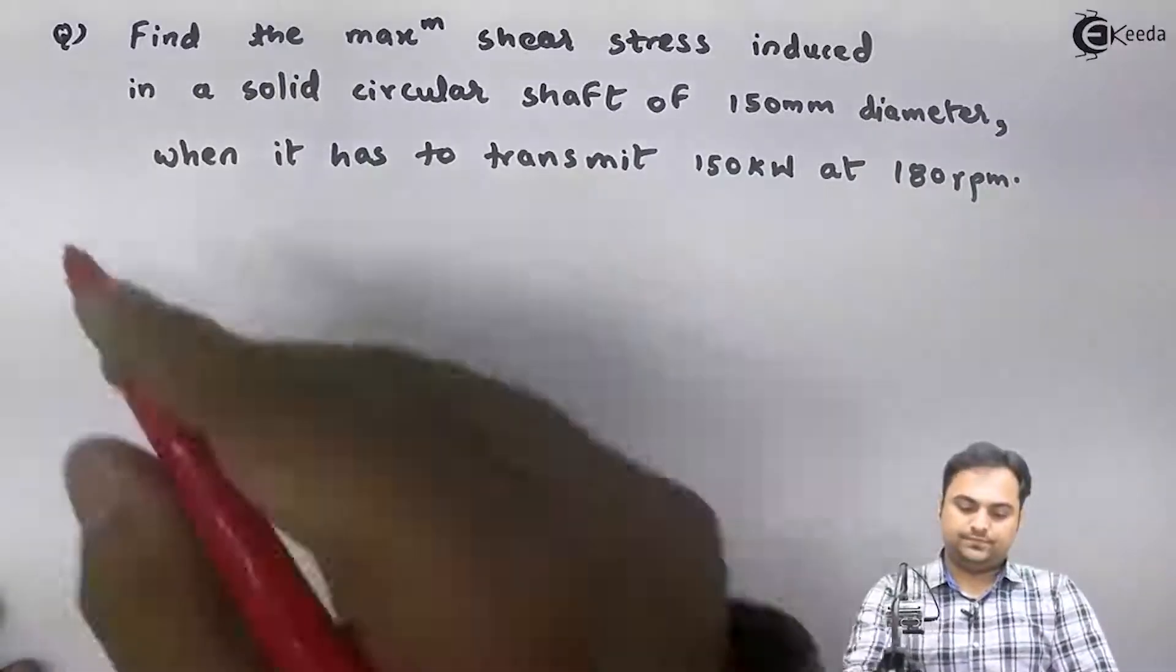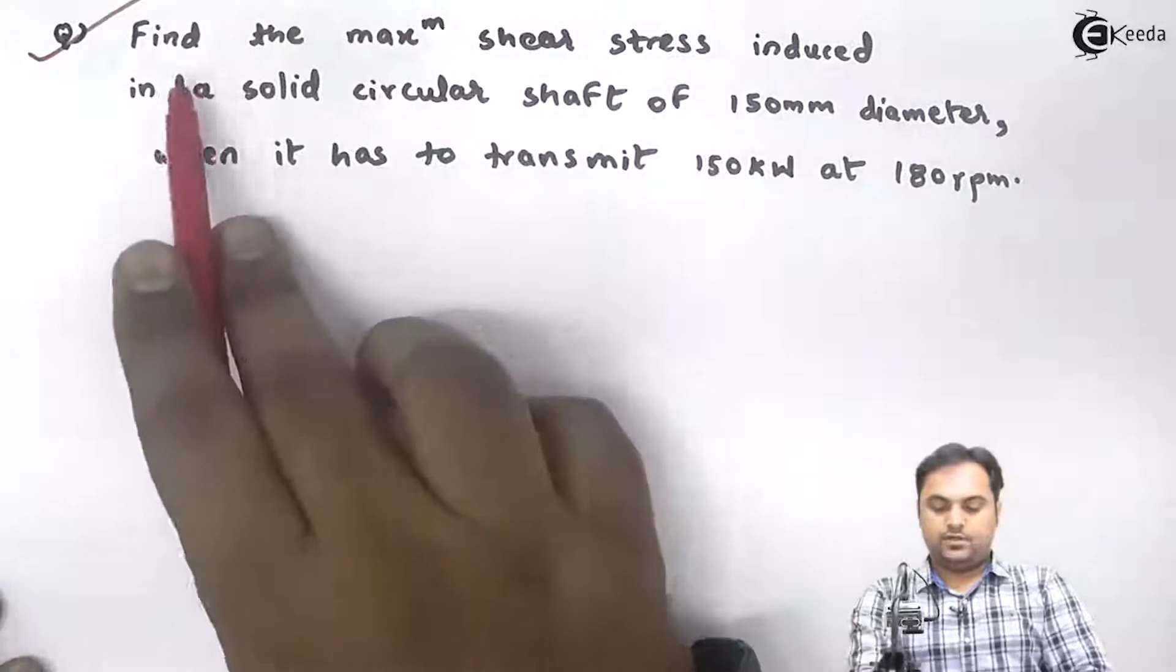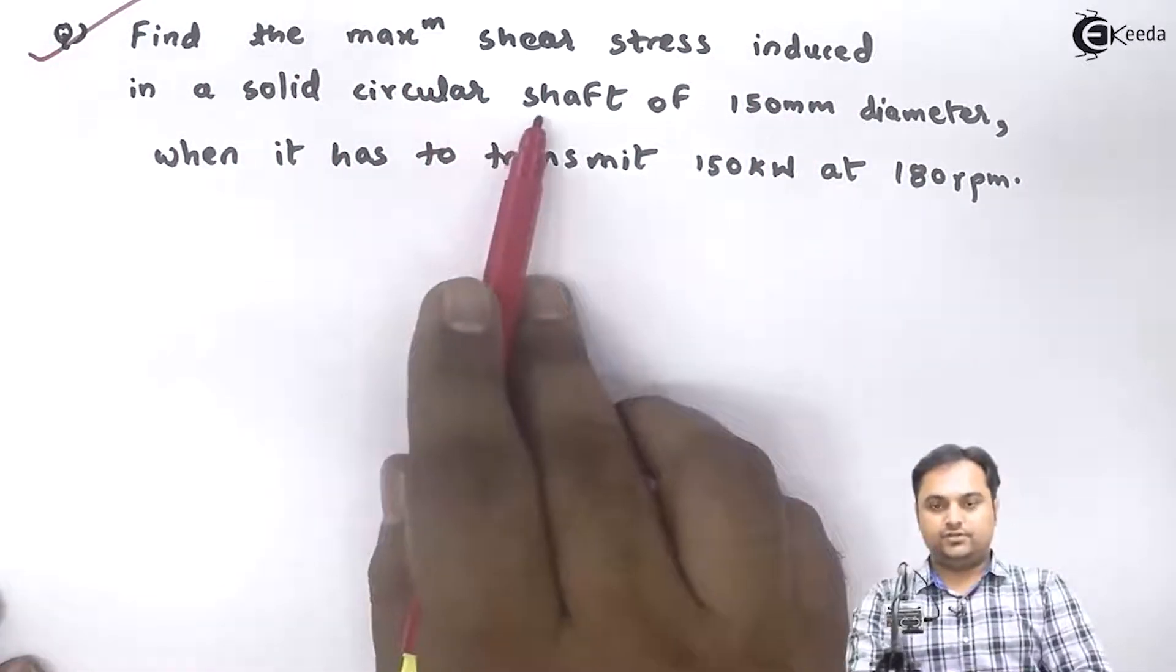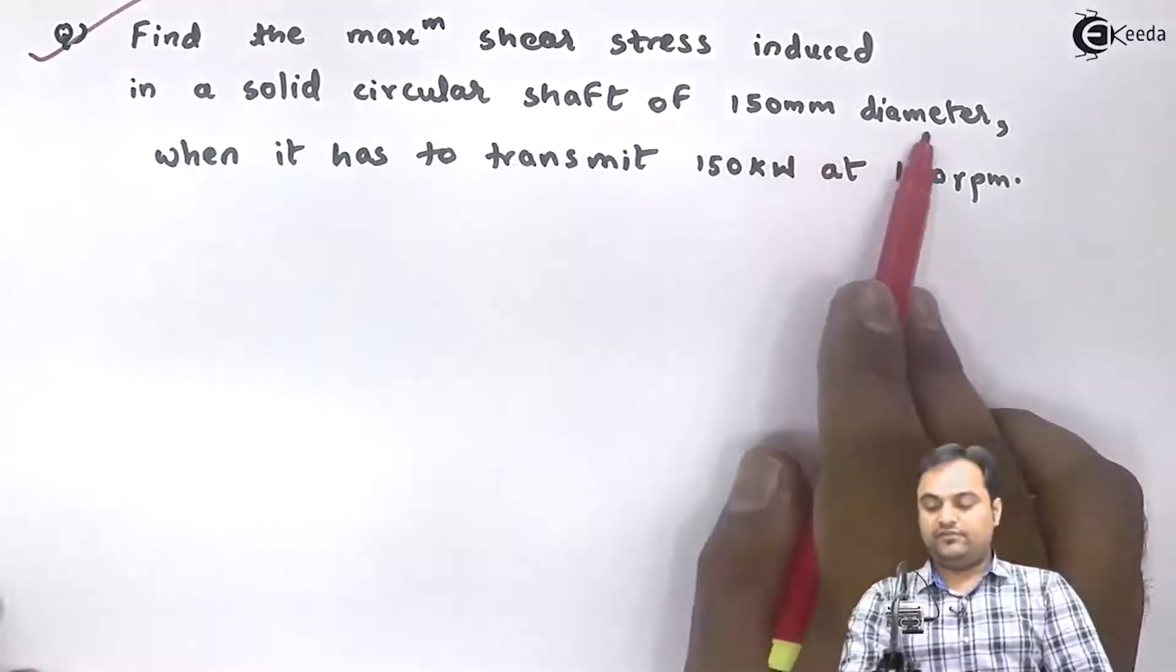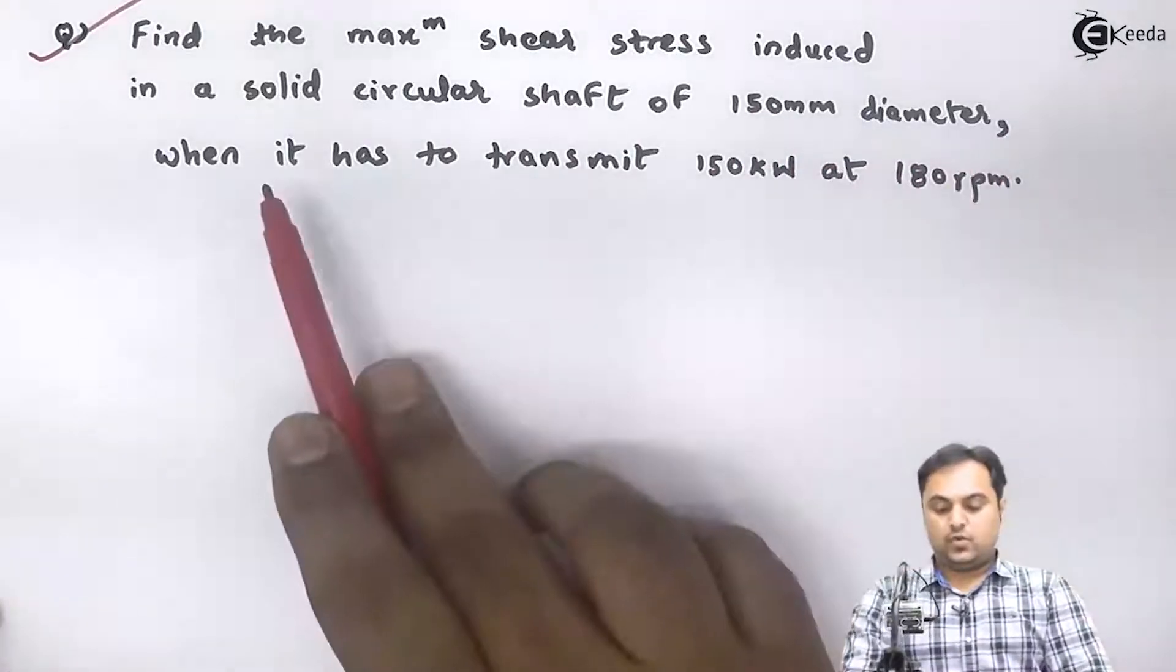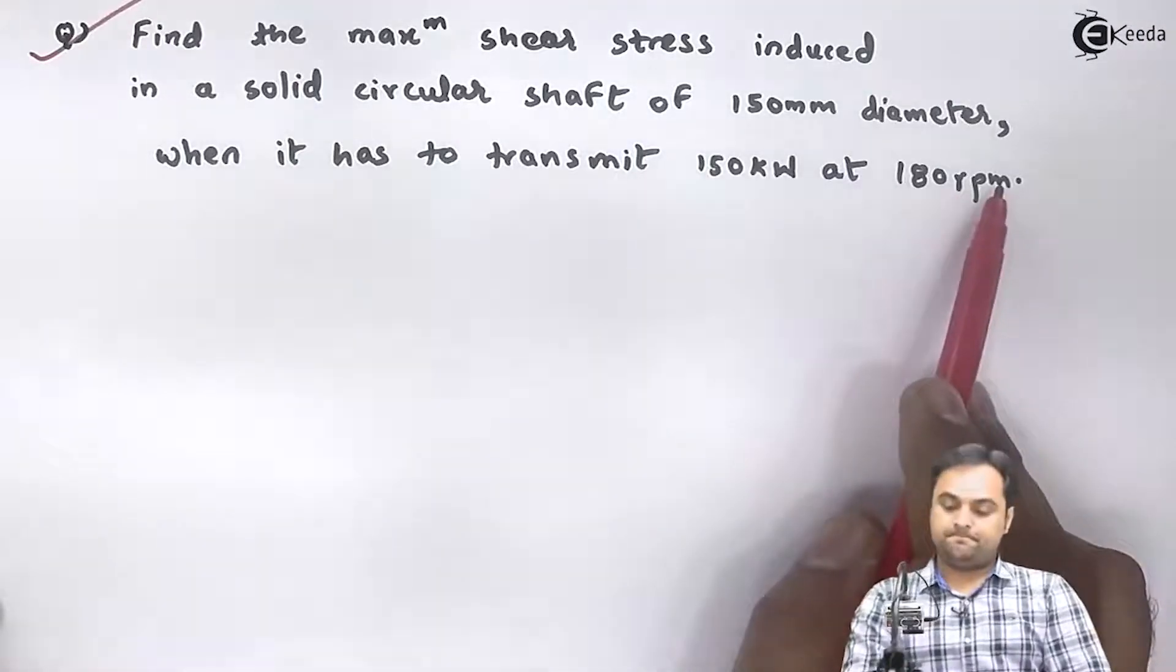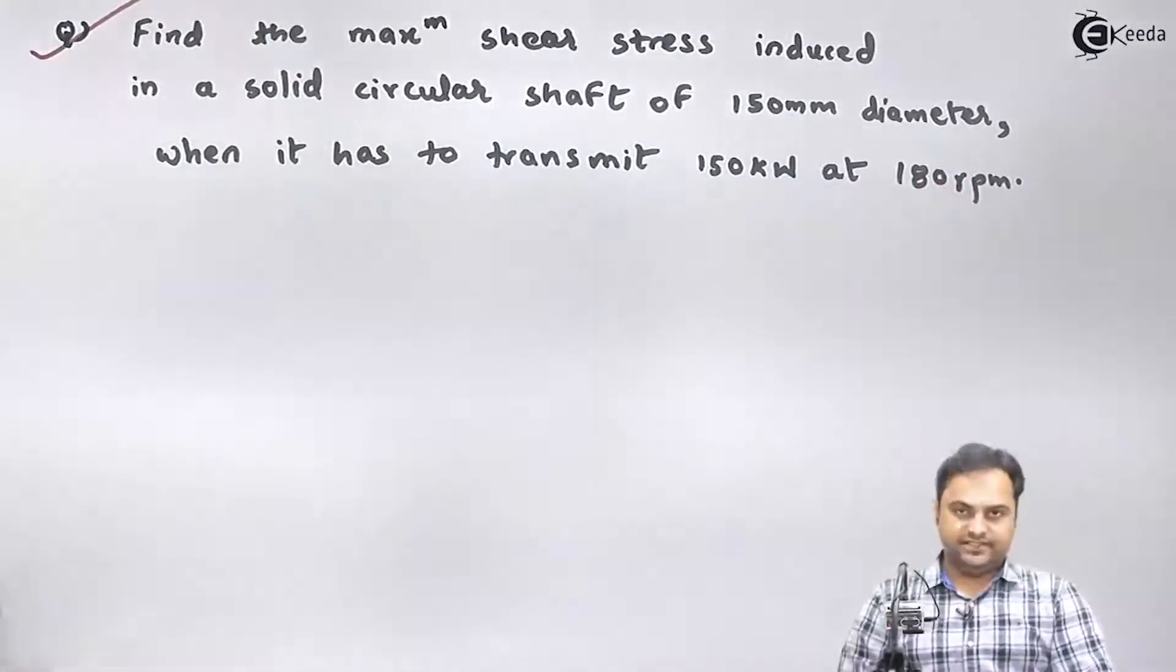Let us take the next question: find the maximum shear stress induced in a solid circular shaft of 150 mm diameter when it has to transmit 150 kilowatts at 180 rpm. Now this is the question, I'll first write the data for this.